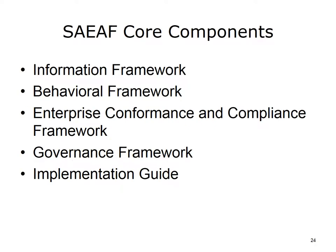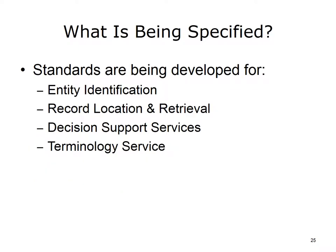The core components are Information Framework, Behavioral Framework, Enterprise Conformance and Compliance Framework, Governance Framework, and an Implementation Guide. The guide provides examples of how you put things together. HL7 standards are being developed for Entity Identification, Records Location and Retrieval, Decision Support Services, and Terminology Service. Entity Identification is used to manage and maintain identities within and across domains, localities, or products. Record location and retrieval is used to discover, retrieve, and update records in distributed environments. Decision Support Services supports evaluation processes, such as clinical decision support. Terminology services are used to retrieve, maintain, and navigate clinical terminologies and ontologies.